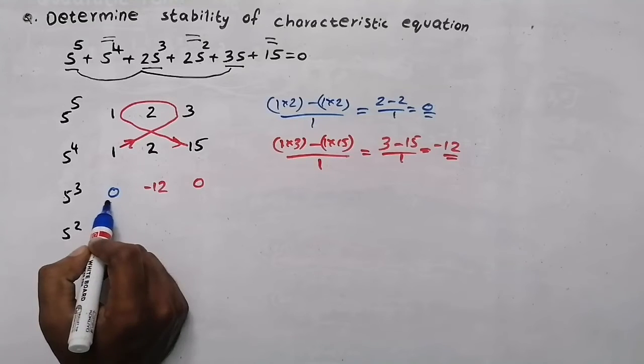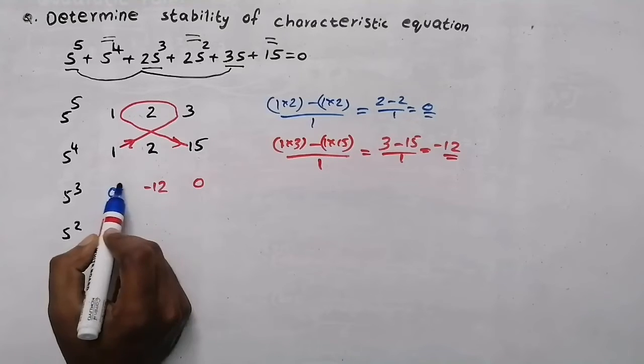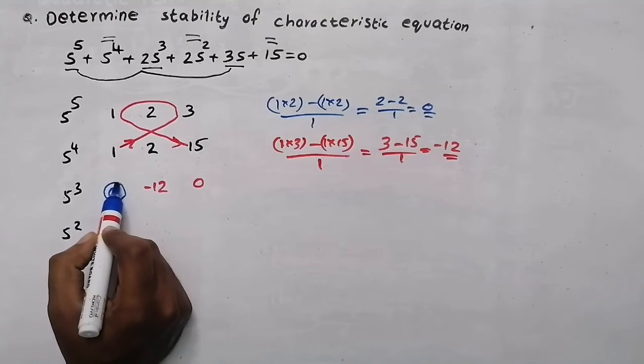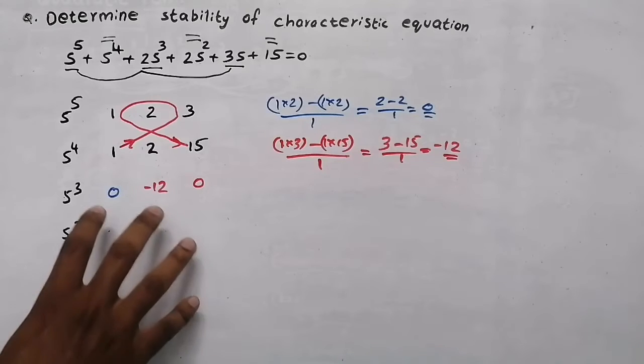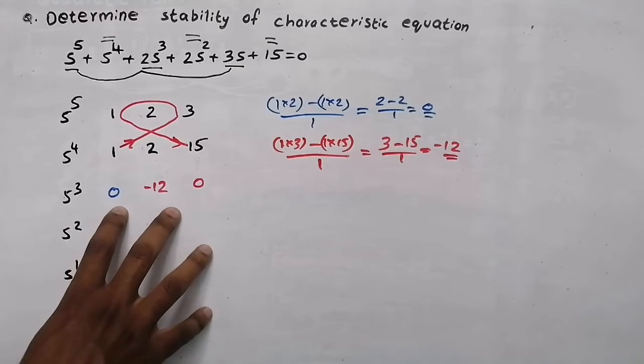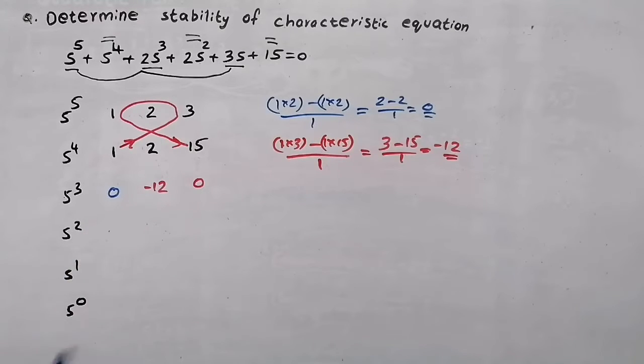The first element in this row is a 0. So we are going to discuss how we can do a problem when we get a 0 as the first element.